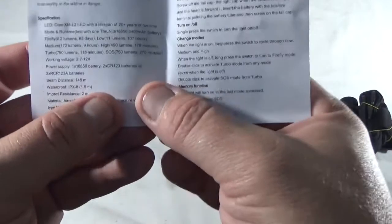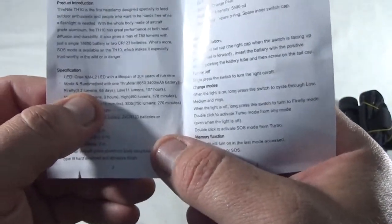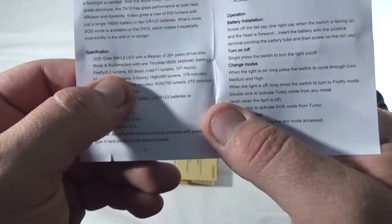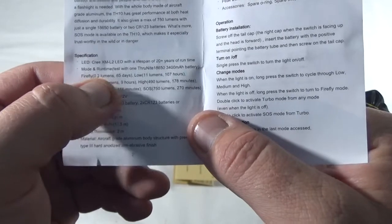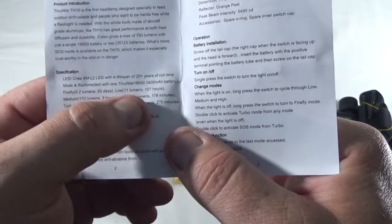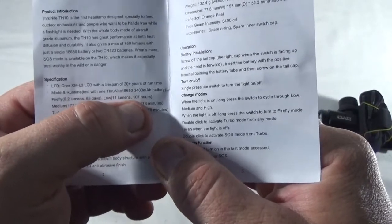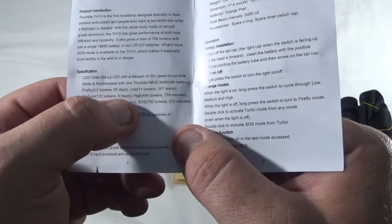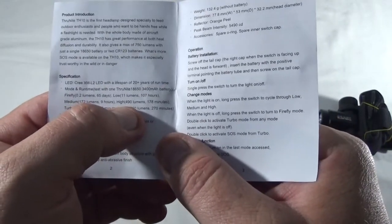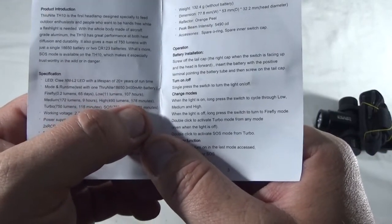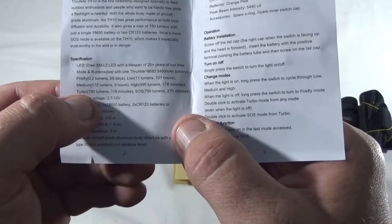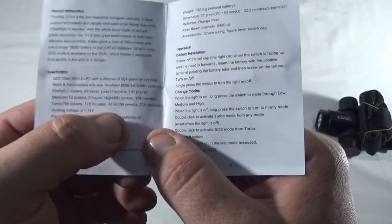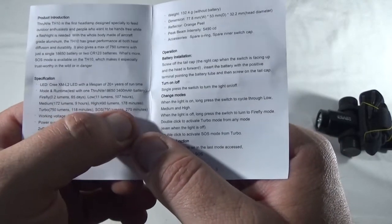It says in here that for Firefly mode, which is a very, very light, it's 0.2 lumens. I can leave this on for 65 days. On low, which is 11 lumens, I can leave it on for 107 hours. On medium, which is 172 lumens, I can leave it on for 9 hours. On high, 490 lumens, I can leave it on for 178 minutes. And turbo, which is 750 lumens, I can leave this light on for 118 minutes. SOS is 750 lumens at 270 minutes.